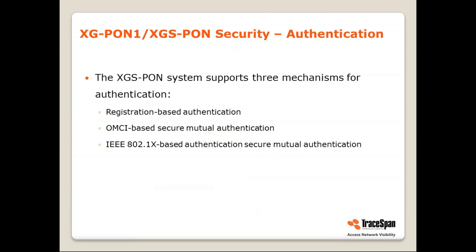The second mechanism, which has several options in the 10G PON technologies, is authentication. There are actually three kinds of authentication defined: registration-based, OMCI-based secure mutual authentication, and IEEE 802.1x-based secure mutual authentication. The first one differs from the other two because those two are mutual authentications.